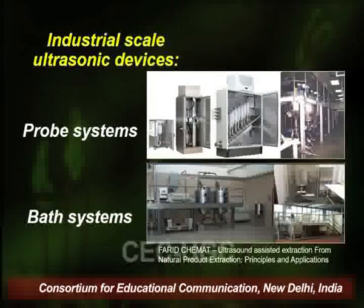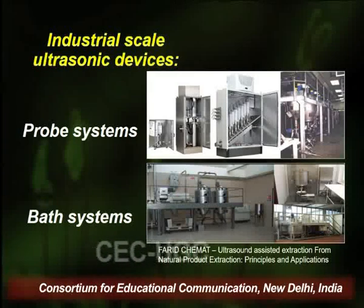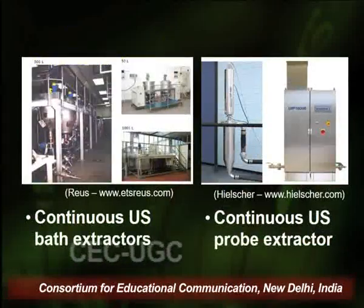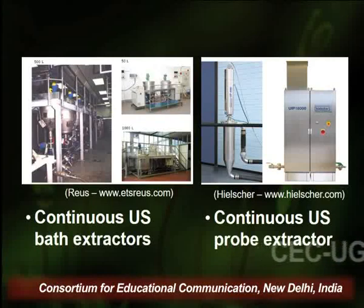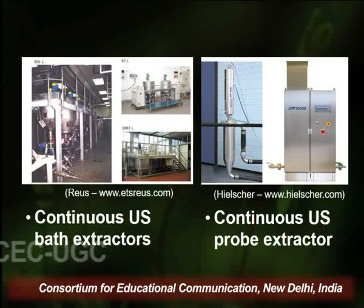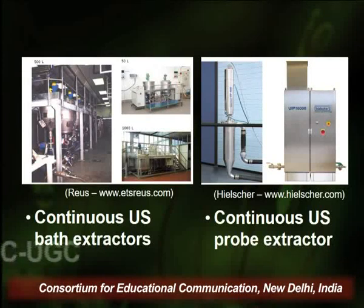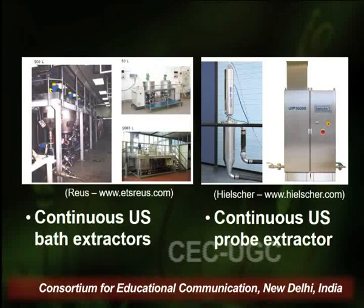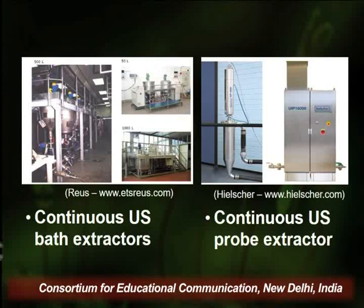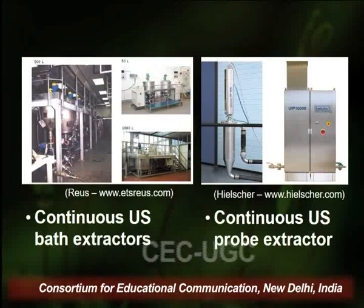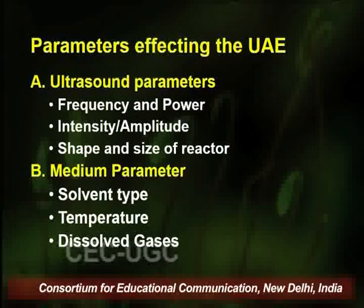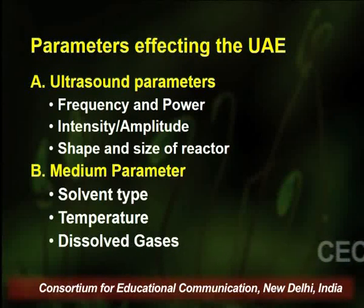Images of industrial-scale ultrasonic devices show probe systems and bath systems available in different volumes depending on the amount of drug to be extracted. A slight modification of conventional sonicators are continuous ultrasonic bath extractors or continuous ultrasonic probe extractors. In the probe extractor, two tubings serve as the inlet and outlet of solvent, allowing continuous extraction with flow adjusted for sufficient contact time. These ultrasonicators are available in sizes ranging from laboratory scale to industrial scale.